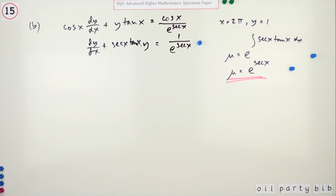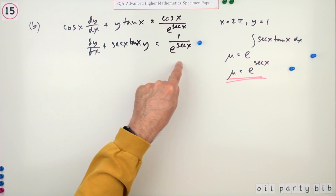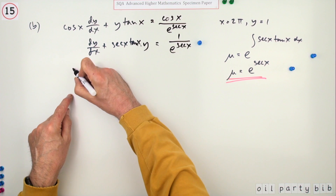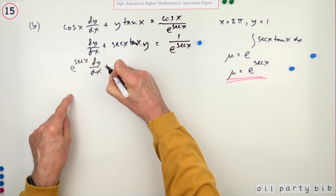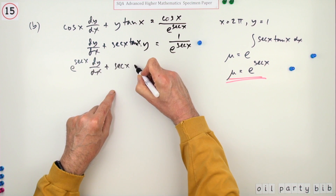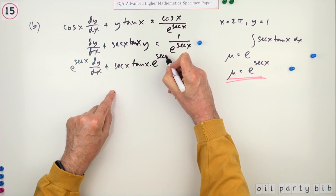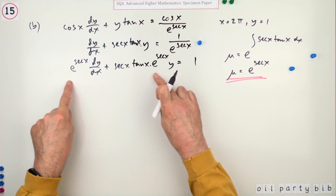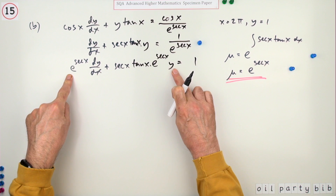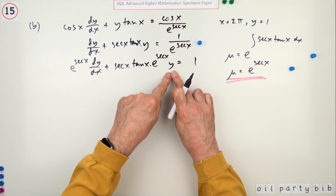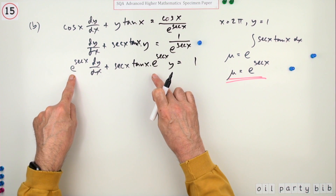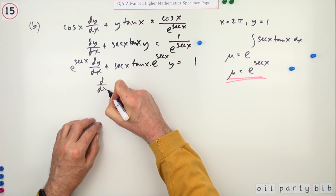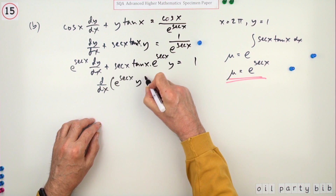Multiply everything on both sides by the integrating factor. On the left you get e^(sec x) dy/dx plus sec x tan x · e^(sec x) · y, and the right-hand side becomes 1. If done correctly, the left side is the exact derivative d/dx[e^(sec x) · y]: e^(sec x) remains and gets multiplied by its derivative sec x tan x. So we have d/dx[e^(sec x) · y] = 1, which earns the fourth mark.